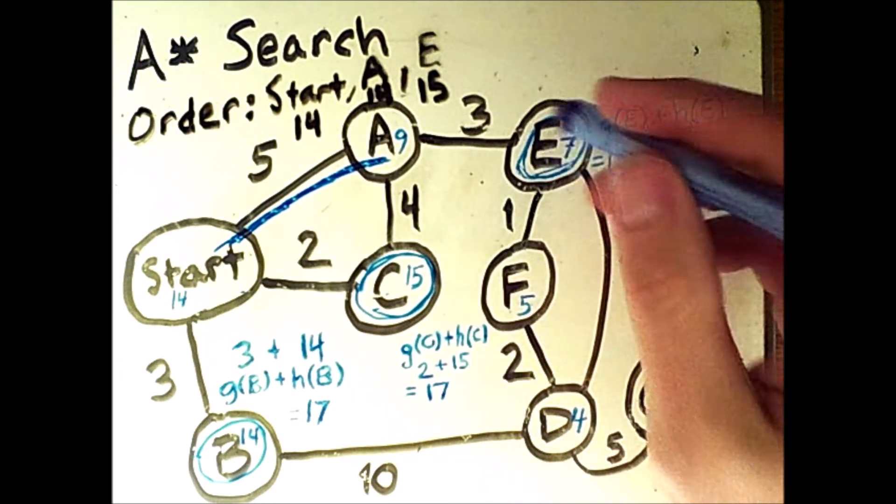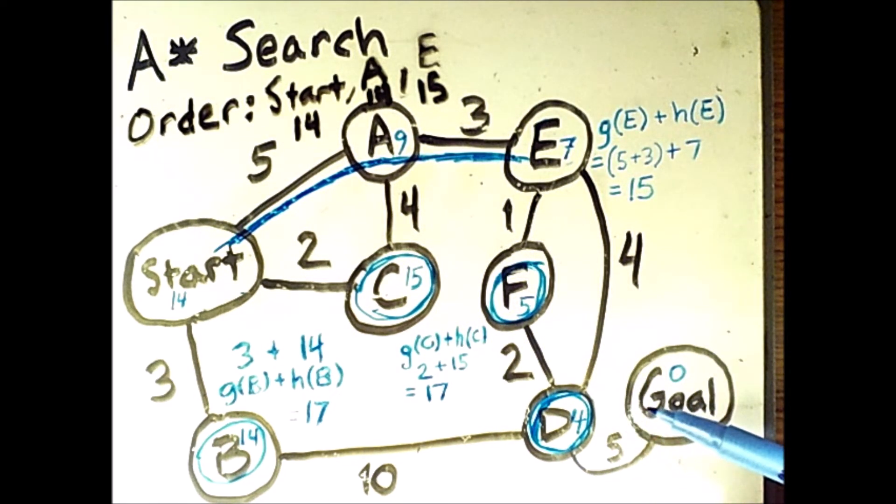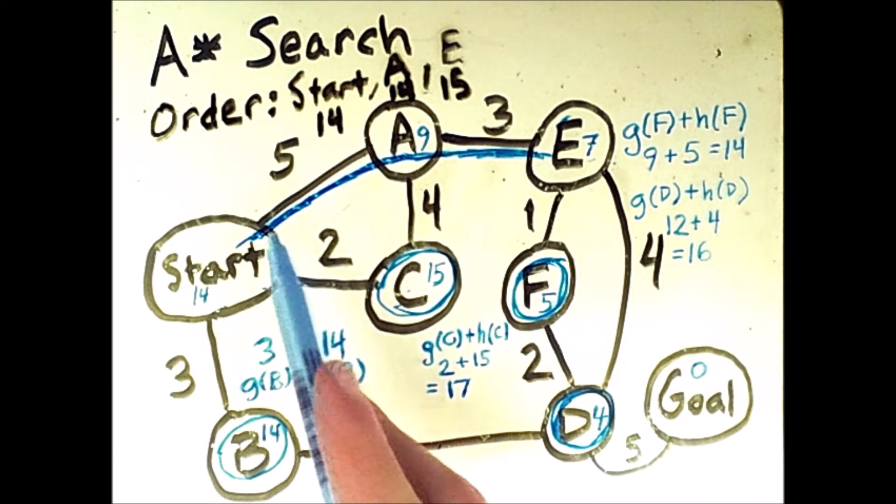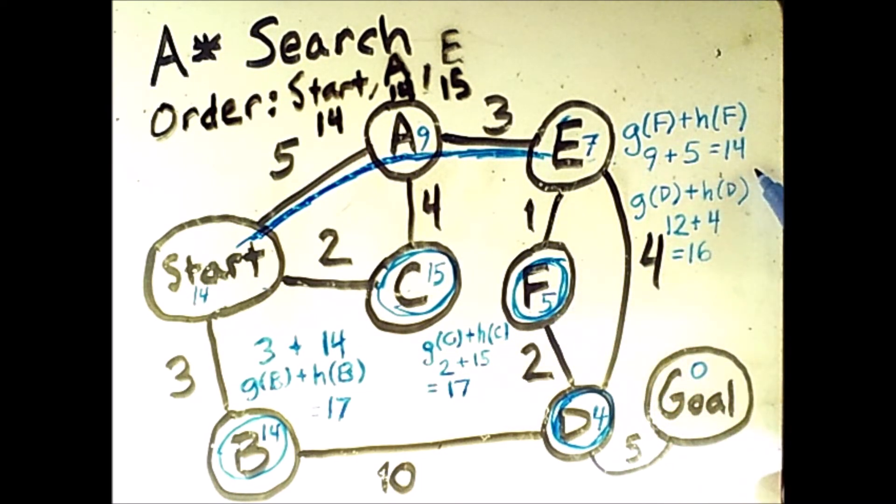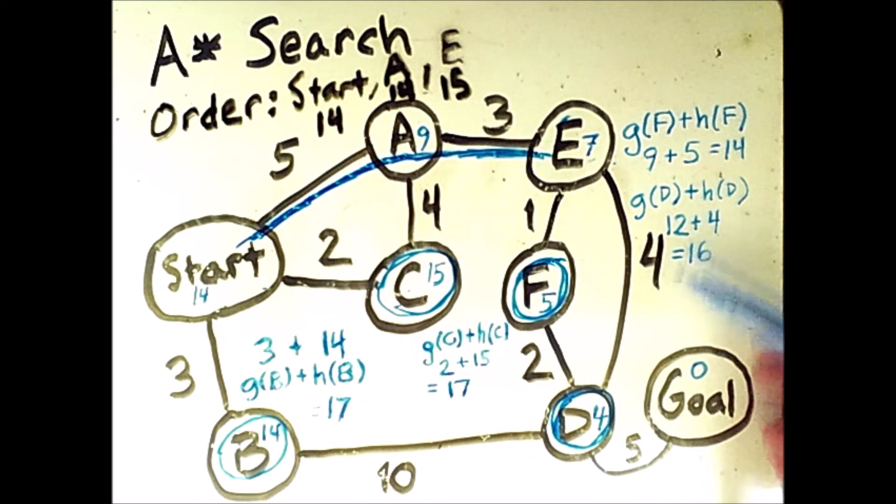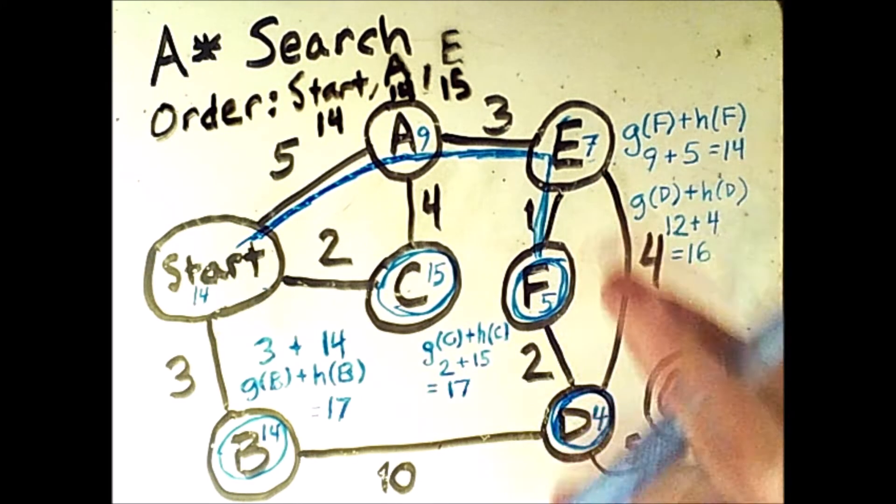And we will remove e from the fringe and then expand our search to go to that point. f and d are now both on the fringe, so we need to know what the priority cost estimates are to each of those notes. So the cost estimate to f is 5 plus 3 plus 1, that's this 9, plus the heuristic value 5 to get 14. And the value to d is 5 plus 3 plus 4, that's this 12 here, plus that heuristic value 4 to get 16. So we could either go to f or to d, but because f has the lower value of 14, we will go there next and remove it from the fringe.